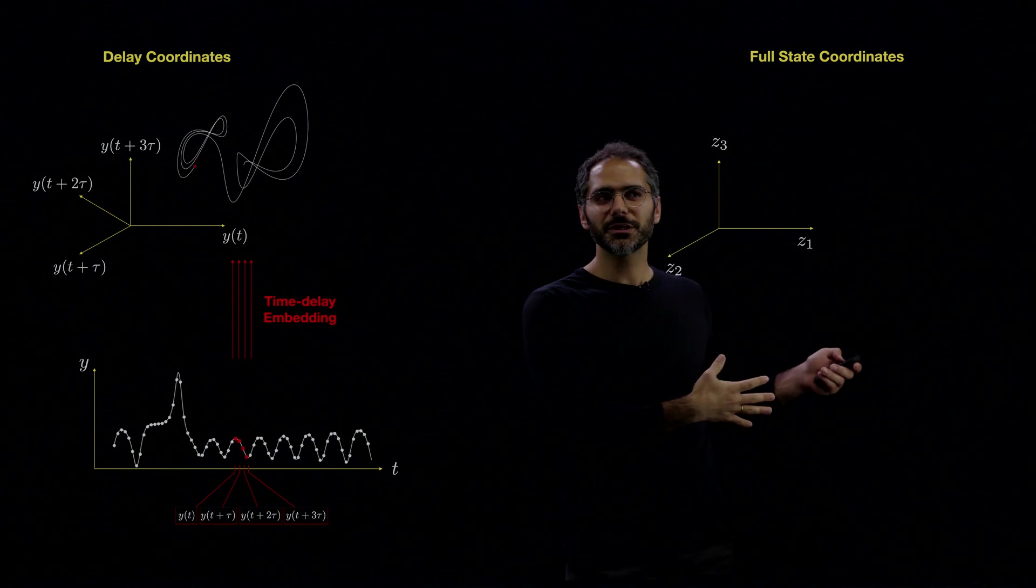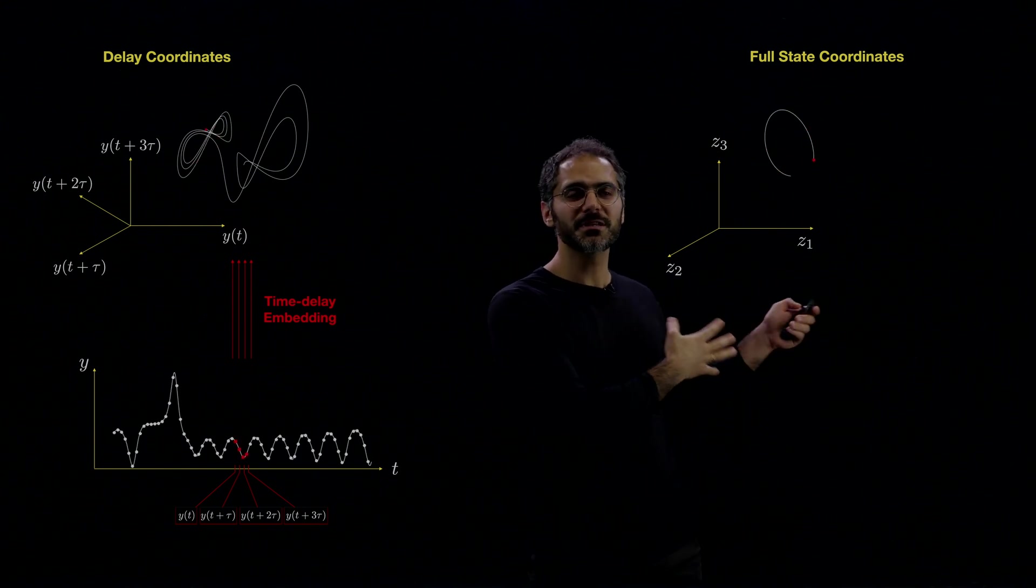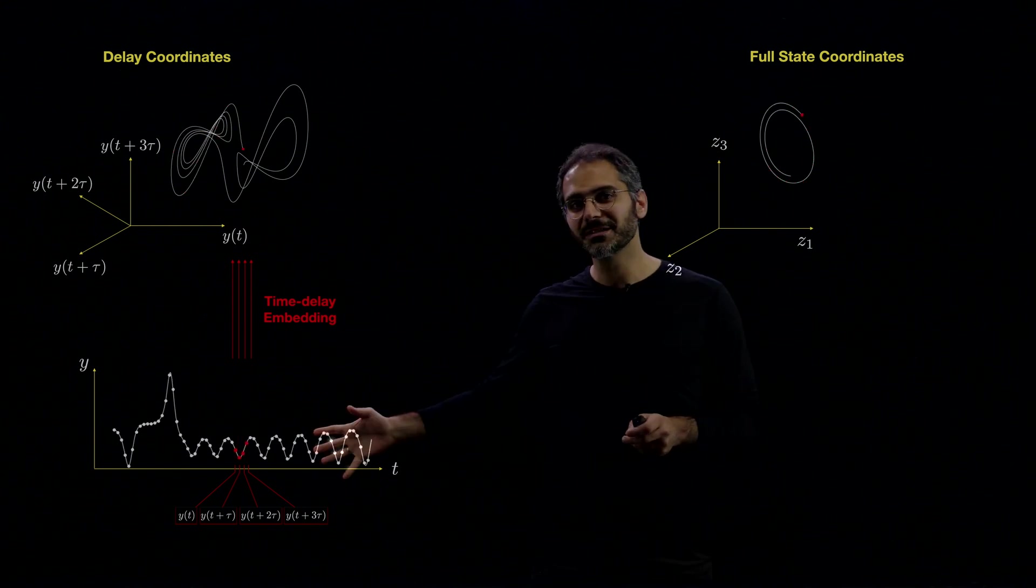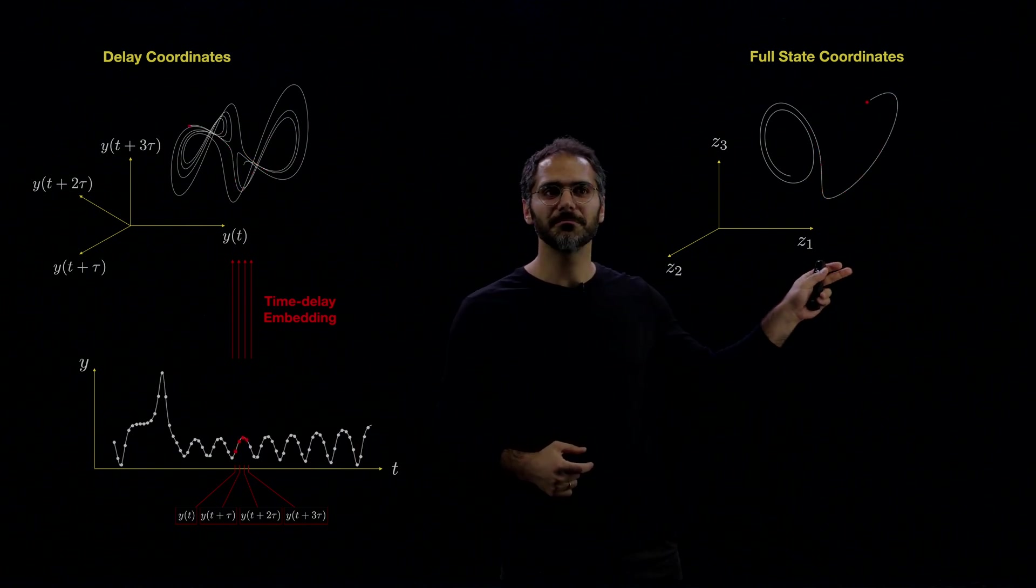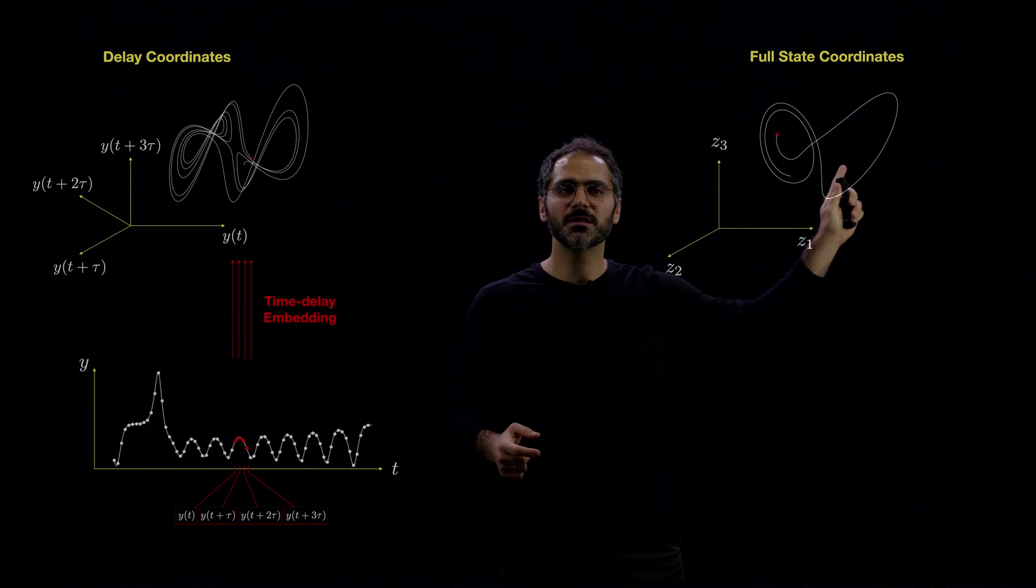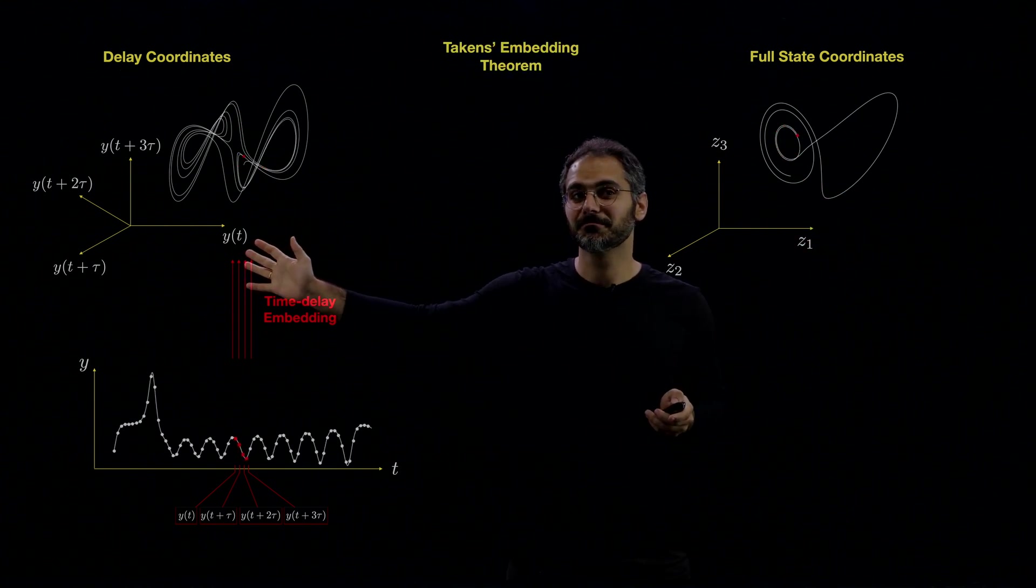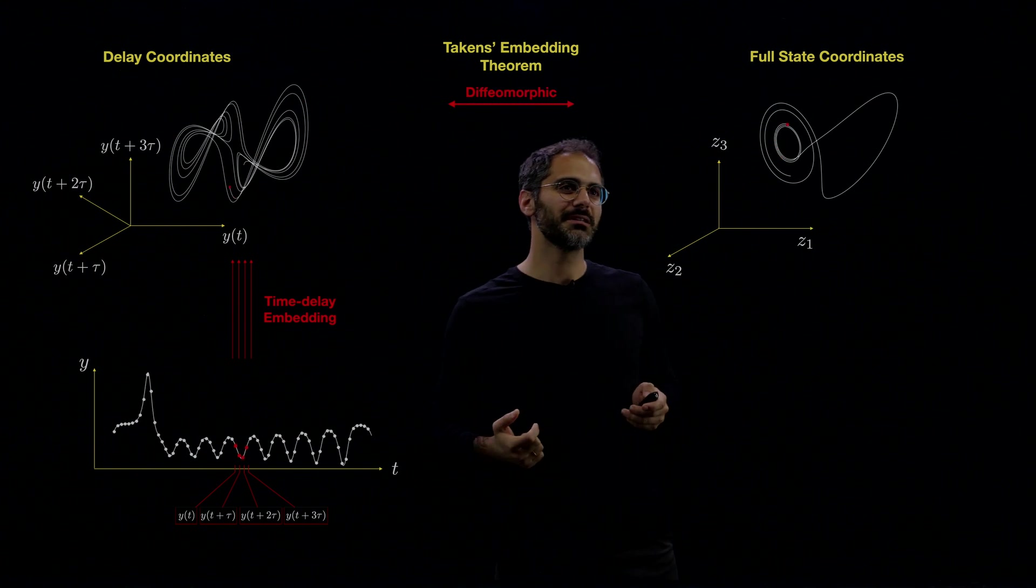Now, as I said earlier, we know that the full-state attractor from which this one-dimensional measurements came, this is the higher dimensional system, we know that this coordinate system is diffeomorphic to this coordinate system because of Takens' embedding theorem.